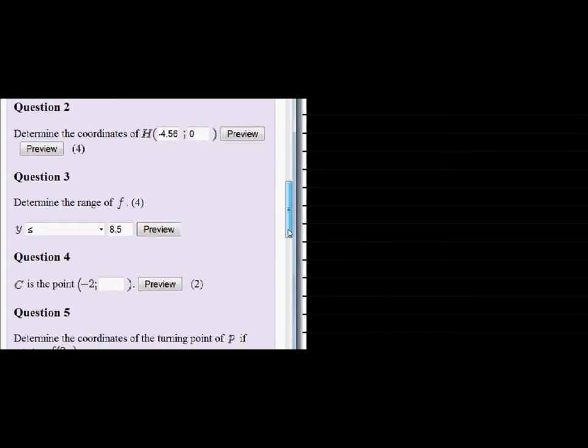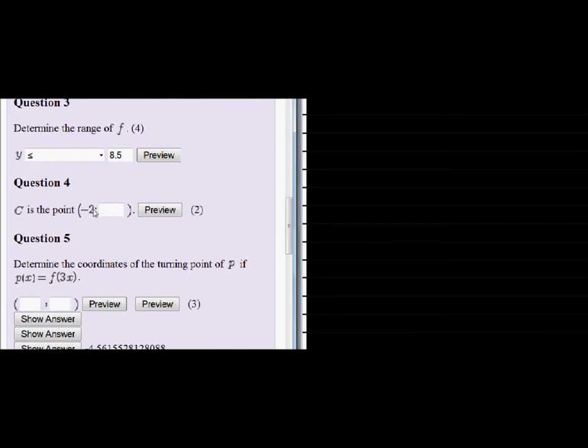So negative 2 is given and we have that C is a point on G.